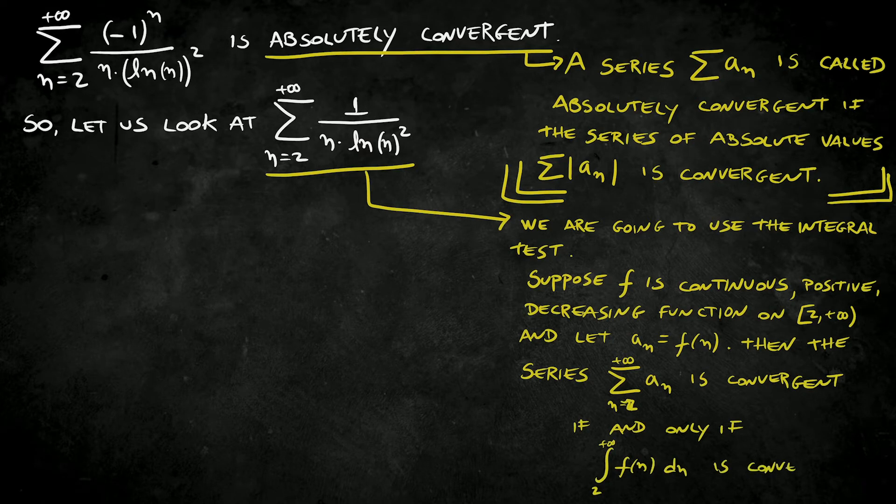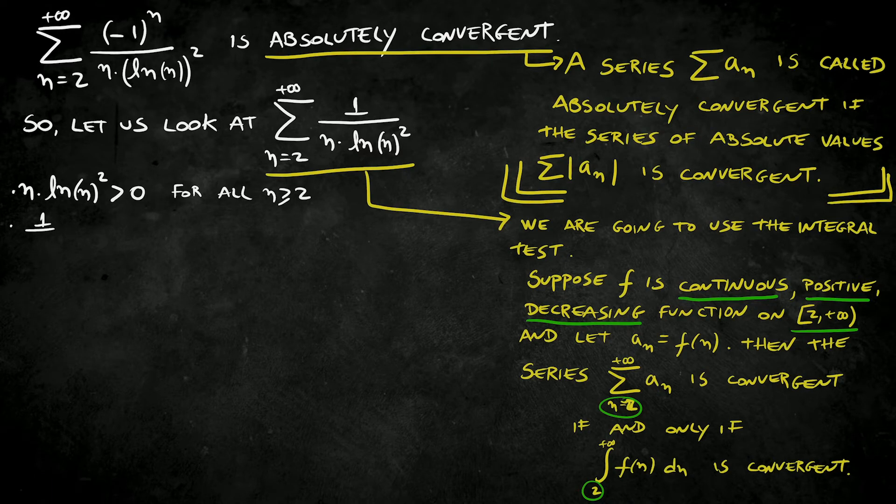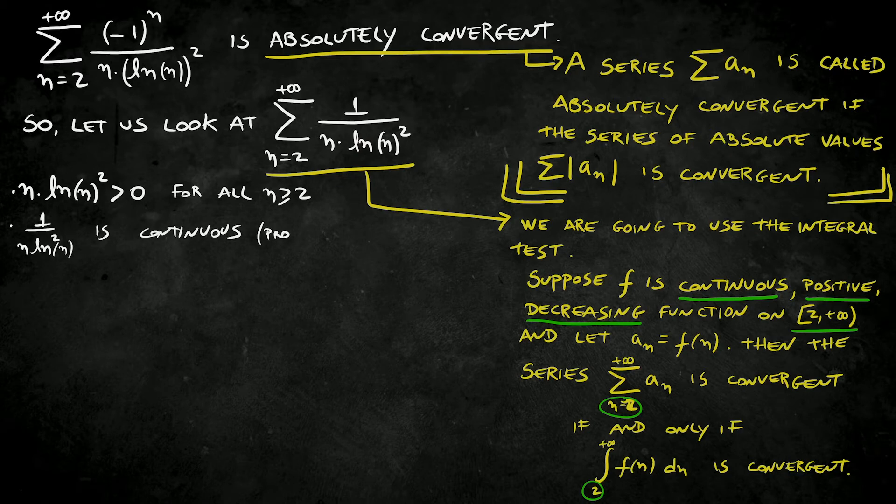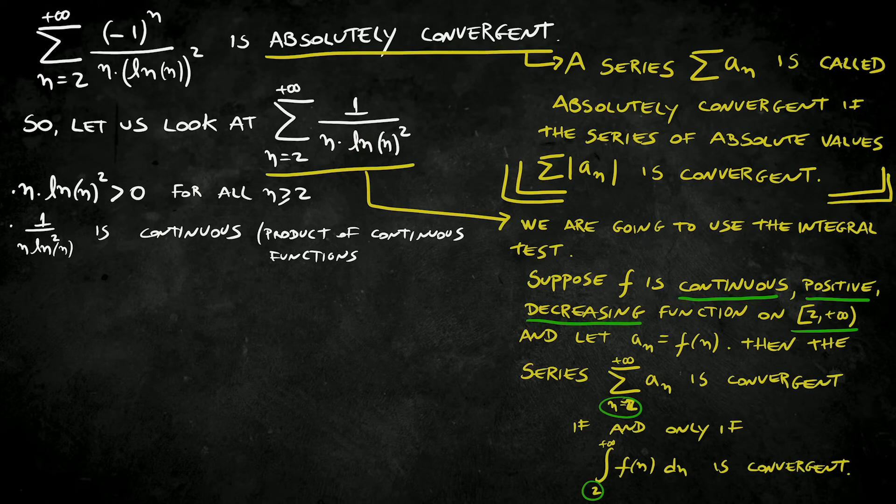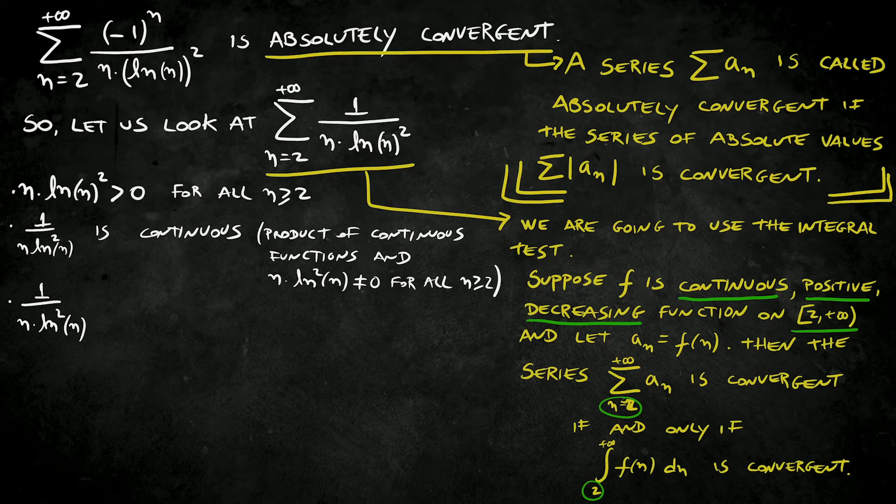Let's check. n times ln of n squared is always positive for all n greater than or equal to 2. Also, 1 over n times ln squared of n is continuous because it's a product of continuous functions and the bottom part is always different than 0 for all n greater than or equal to 2. Moreover, it is decreasing, so we can apply the integral test.